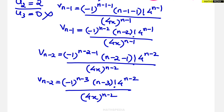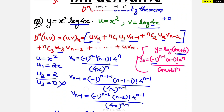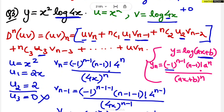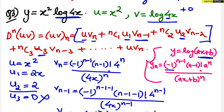One more important thing: we need the combinatorial terms. In the Leibniz formula the terms are nC1 and nC2 (nC3 is not needed since u3 = 0). So we need to find nC1 and nC2.